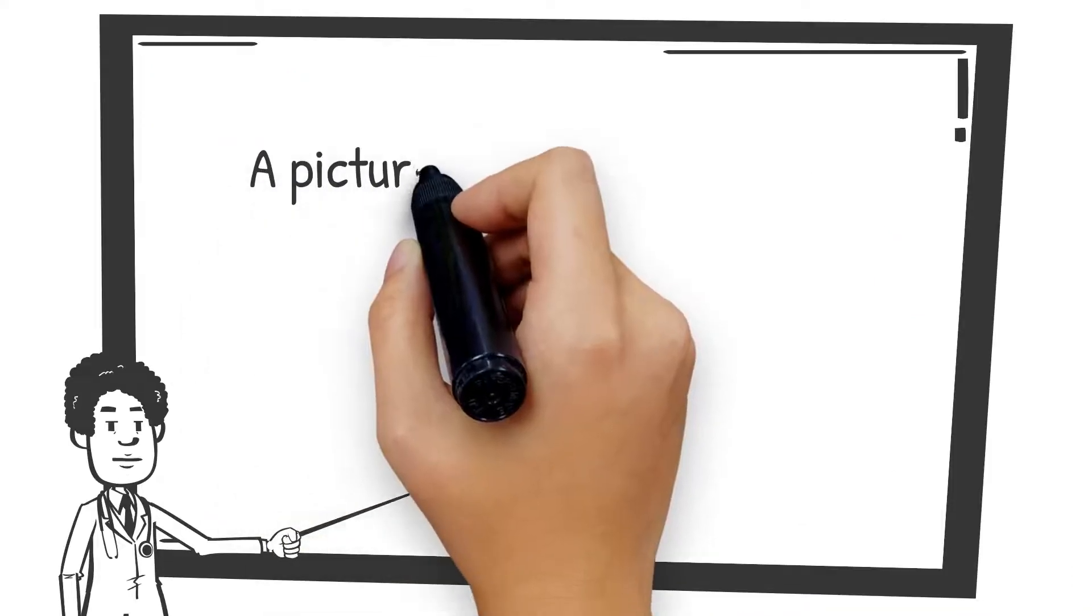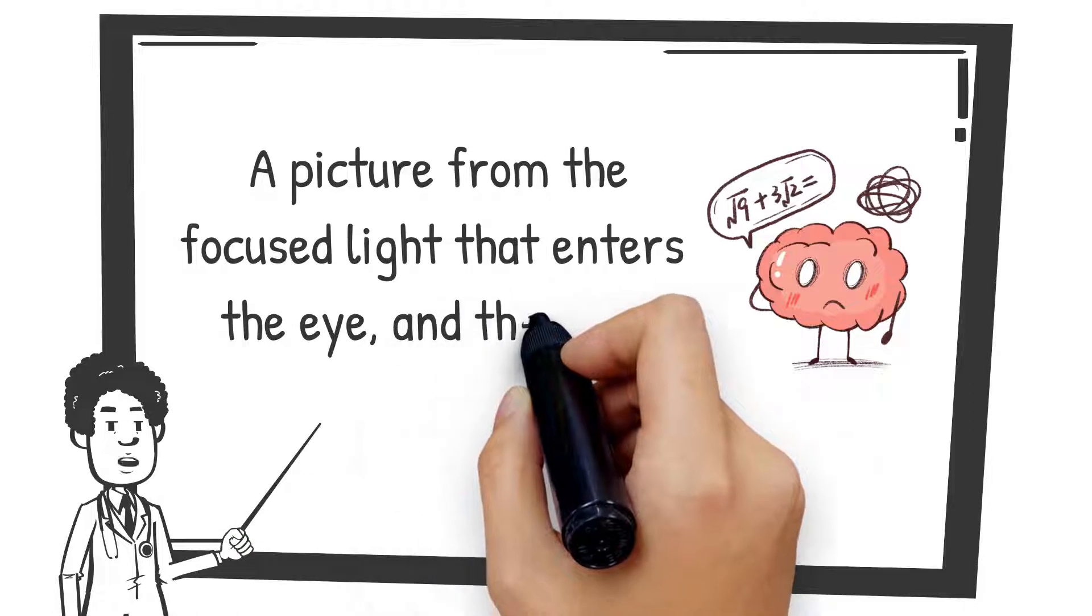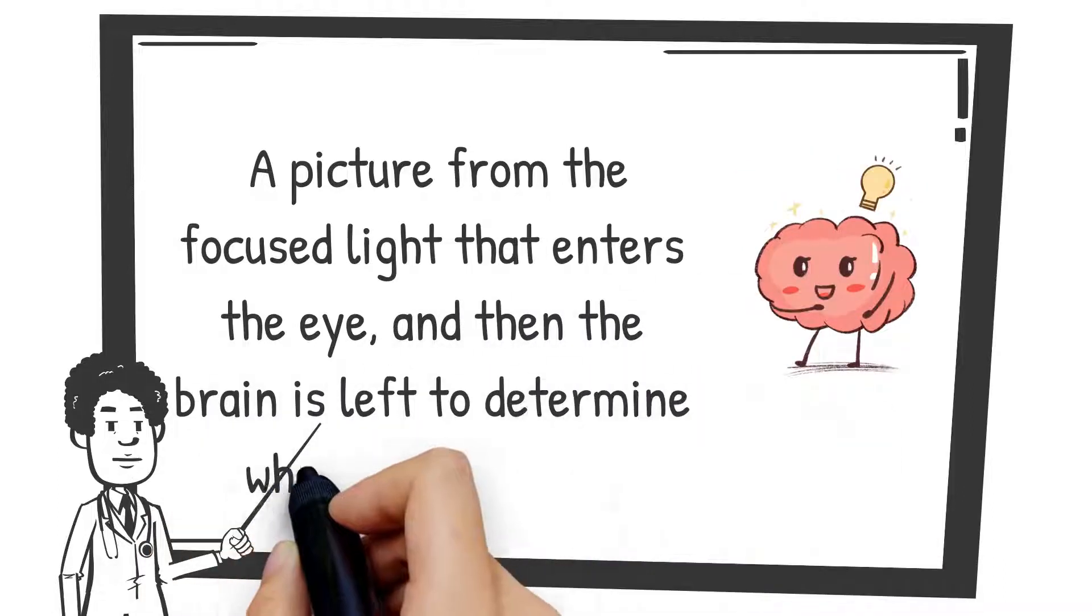In simple words, it processes a picture from the focused light that enters the eye and then the brain is left to determine what the picture is.